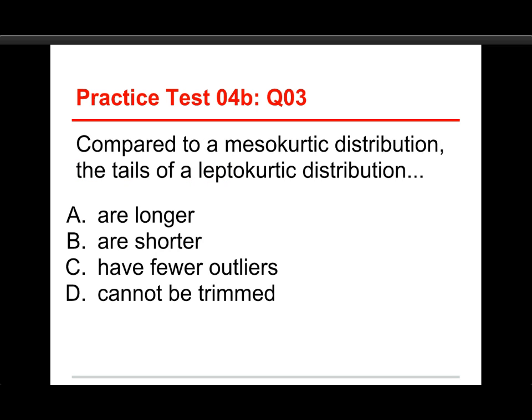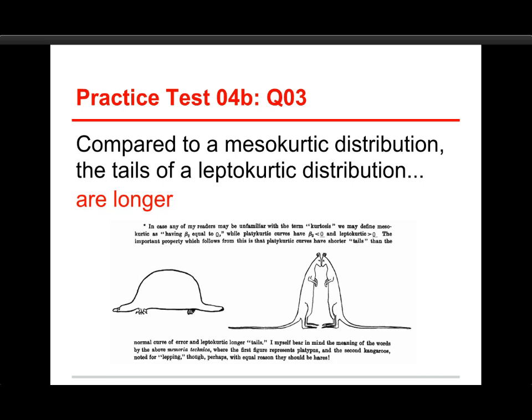Number three: compared to a mesocurtic distribution, the tails of a leptocurtic distribution are longer, shorter, have fewer outliers, or cannot be trimmed. The answer is they are longer. Mesocurtic is the normal distribution — the bell curve — with moderate tails. On the left is the platycurtic, like a platypus with a large hump in the middle and very short tails. On the right, the kangaroos form the leptocurtic, because kangaroos are known for lepping, meaning leaping. There are a lot of outliers in a leptocurtic distribution because the scores are spilling out into the long tails — that's really the defining characteristic of a leptocurtic distribution.